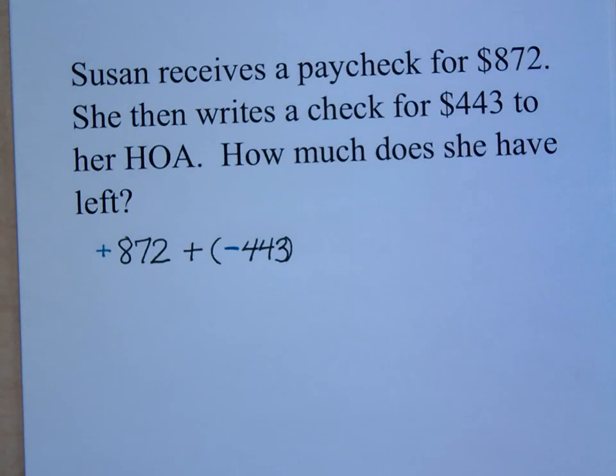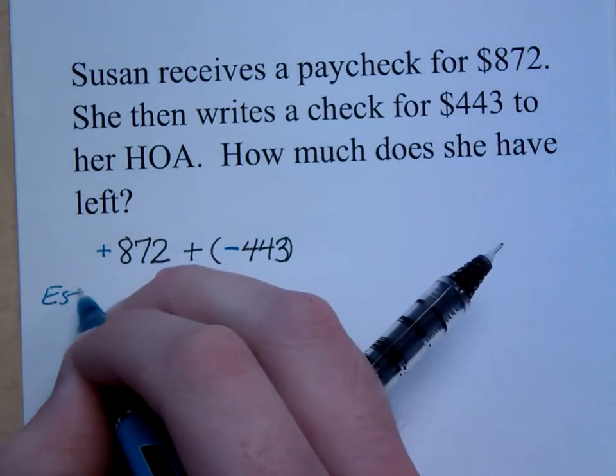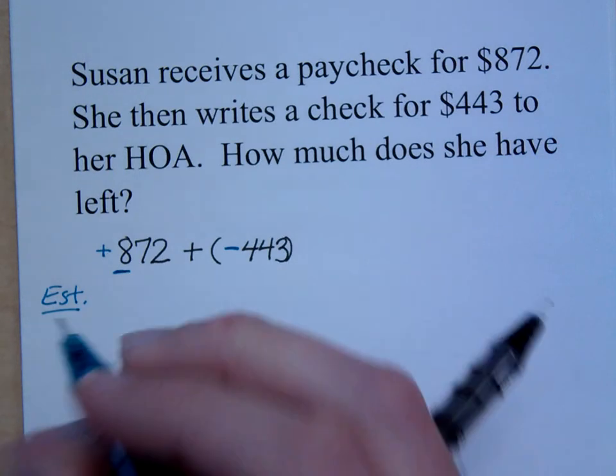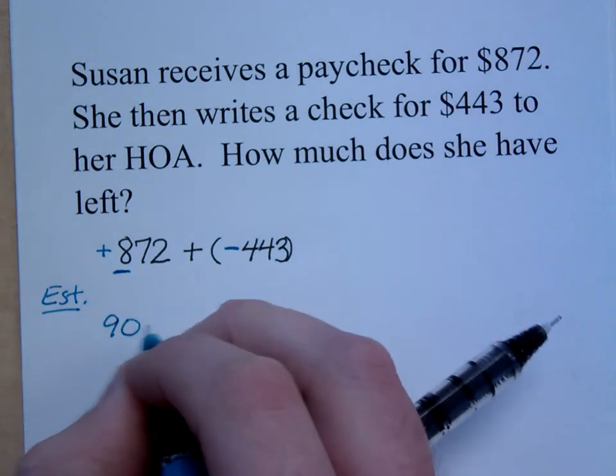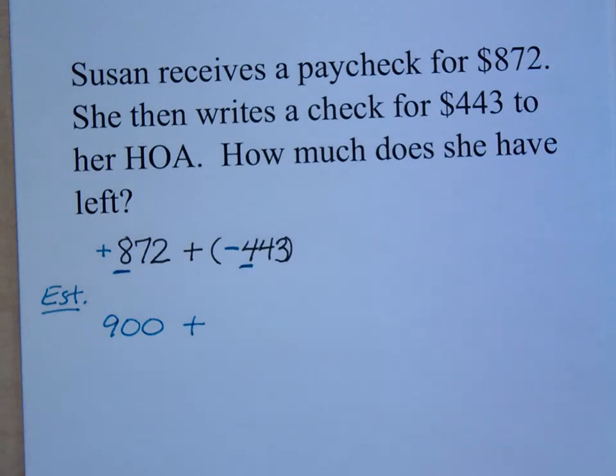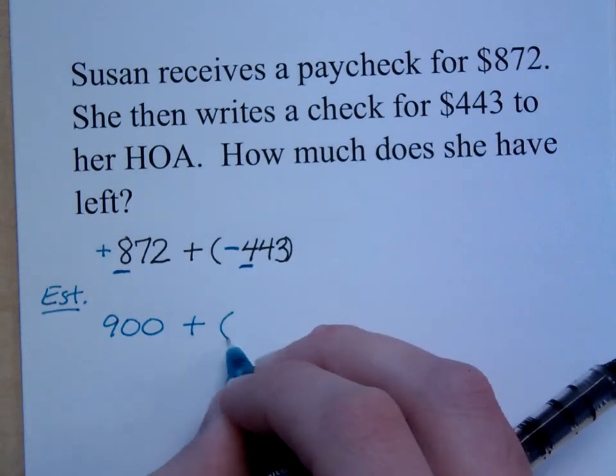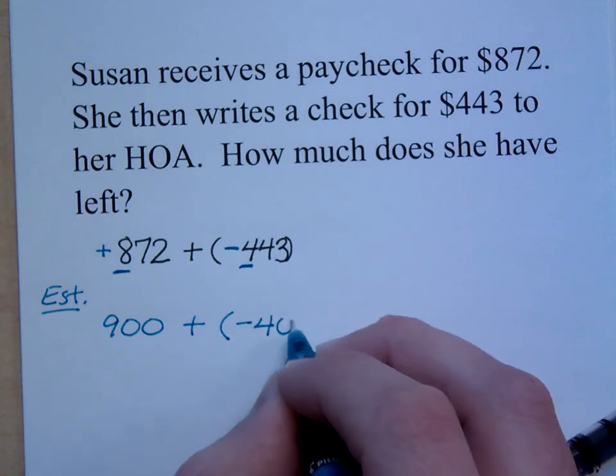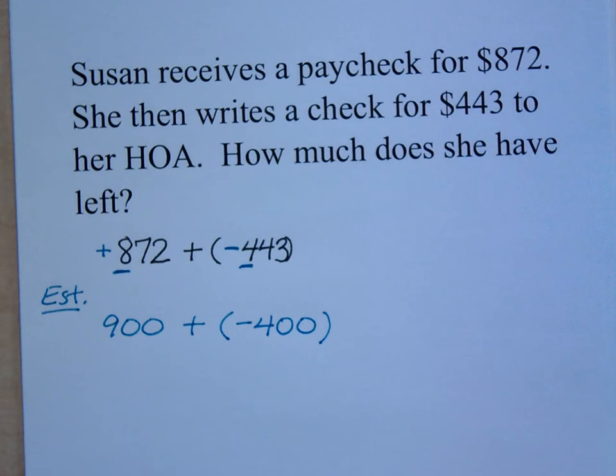If I were to do an estimation here based on front-end rounding, how would you estimate $872 if you round to the nearest hundreds? So that's about 900 plus, if I round this guy, what is he? 400. It's 400, so we're going to make this a negative 400. Do you all agree? Yes.